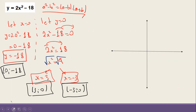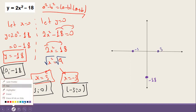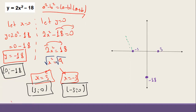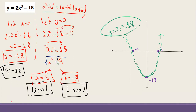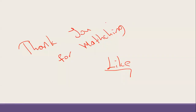I place the points on the coordinate system: (0, -18) somewhere here, (-3, 0) and (3, 0) on the x-axis. Then I join them by a curve, which gives me y = 2x² - 18. Thank you so much for watching this video. Have a good day, goodbye!